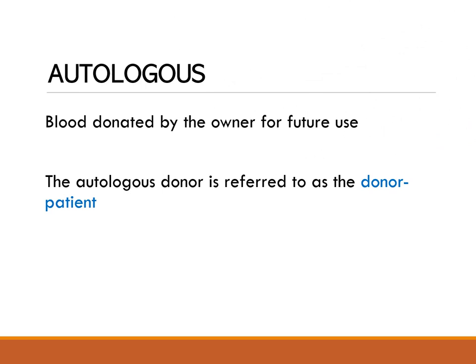The third type of blood donation is autologous blood donation — blood donated by the owner for future personal use. The autologous donor is referred to as the donor-patient because he is both the donor and the recipient of his own donated blood.